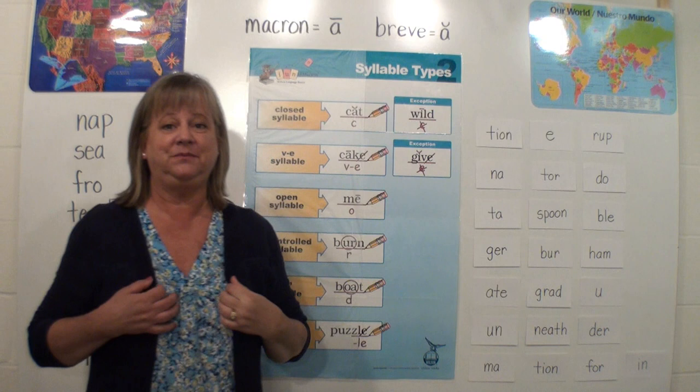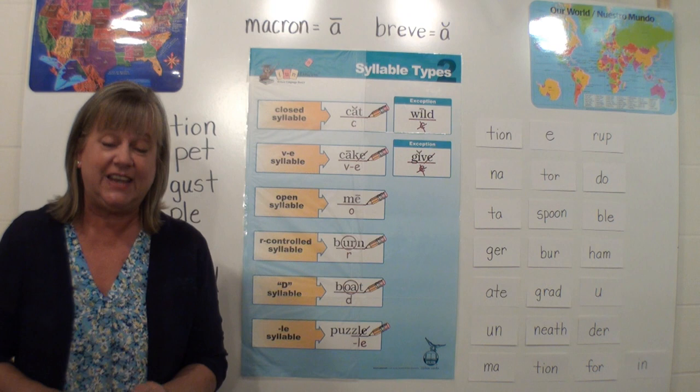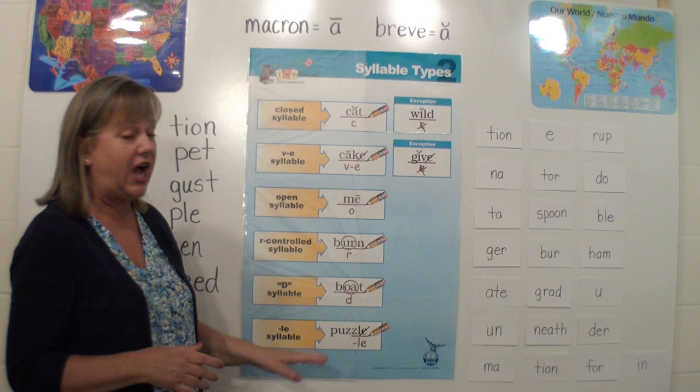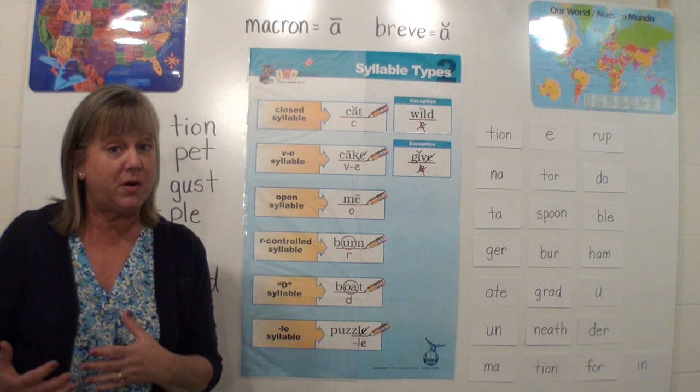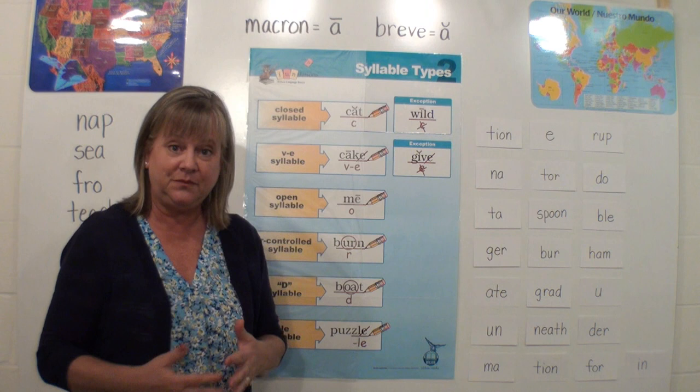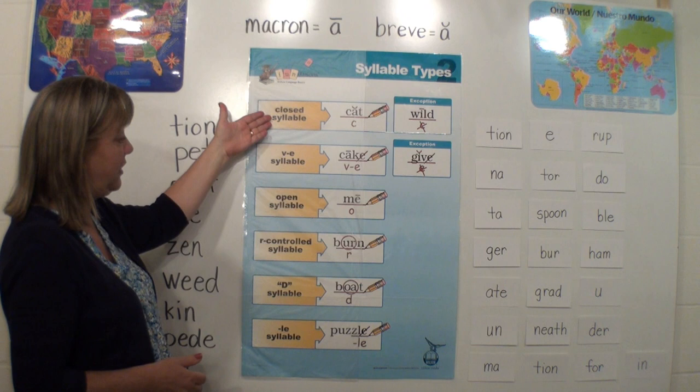It says up here: syllable types. Now, there are six main syllable types in the English language, and if we know them, we can read almost any word that comes along. The syllable types you have been taught throughout second grade — maybe not formally, like I'm teaching you now because I am a reading specialist, but you have been taught them through your spelling words throughout the year. So there are six main types, and I'll go over them.